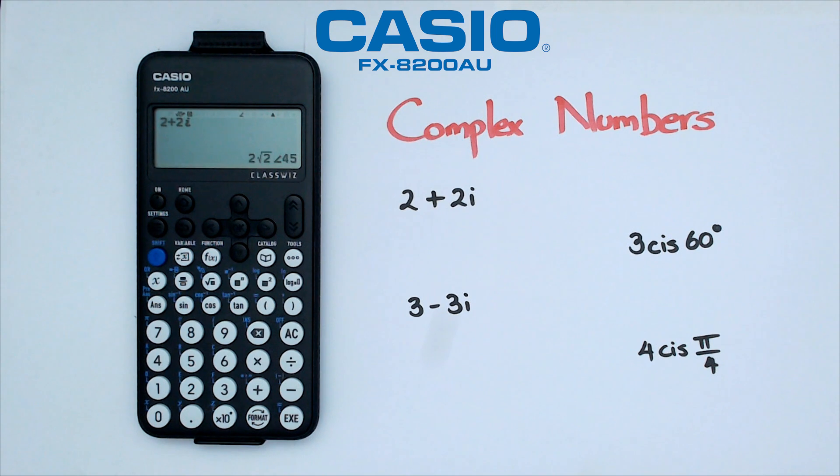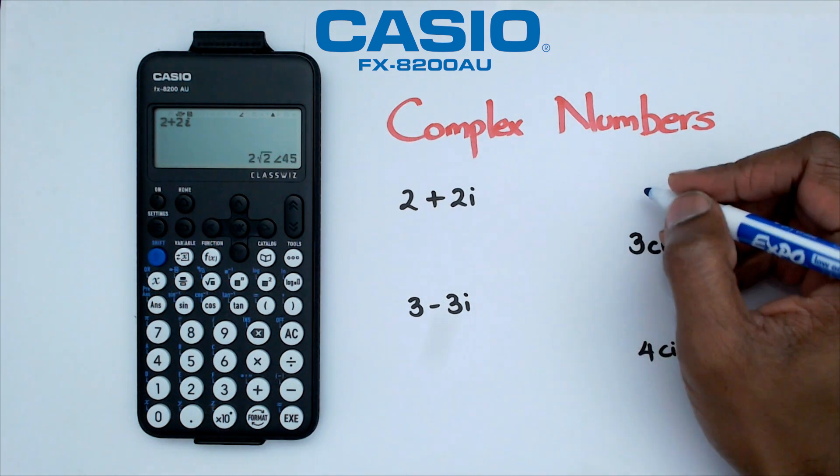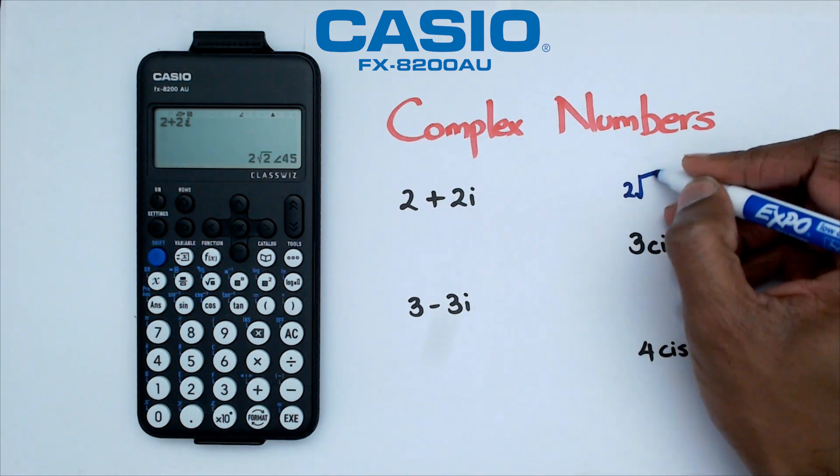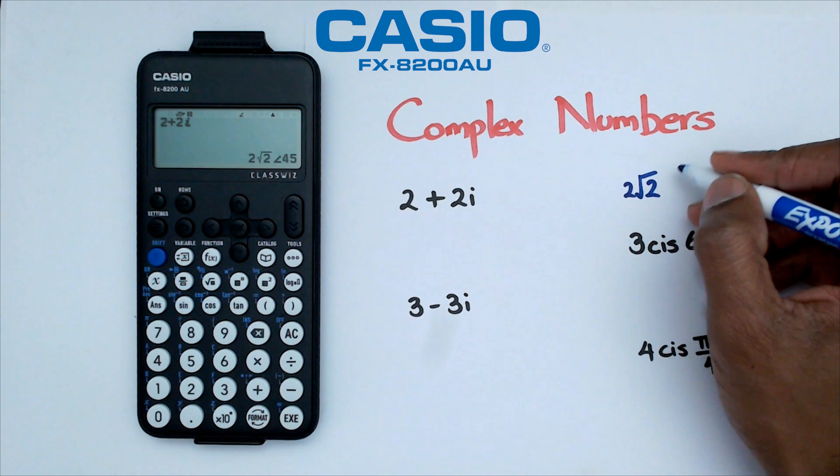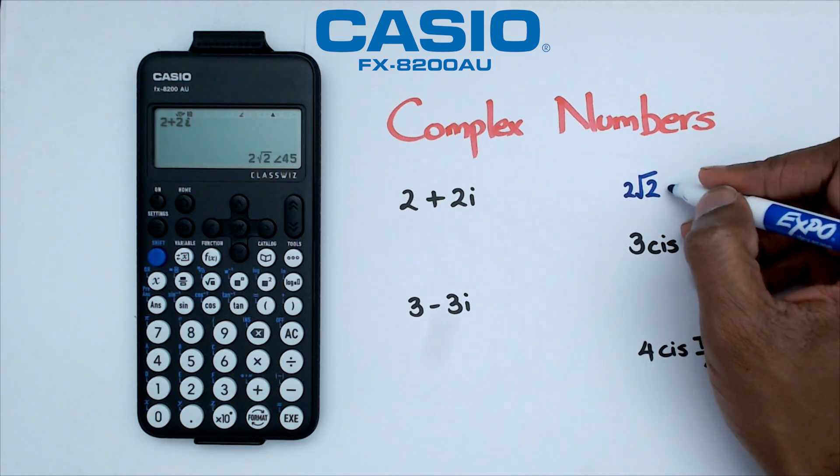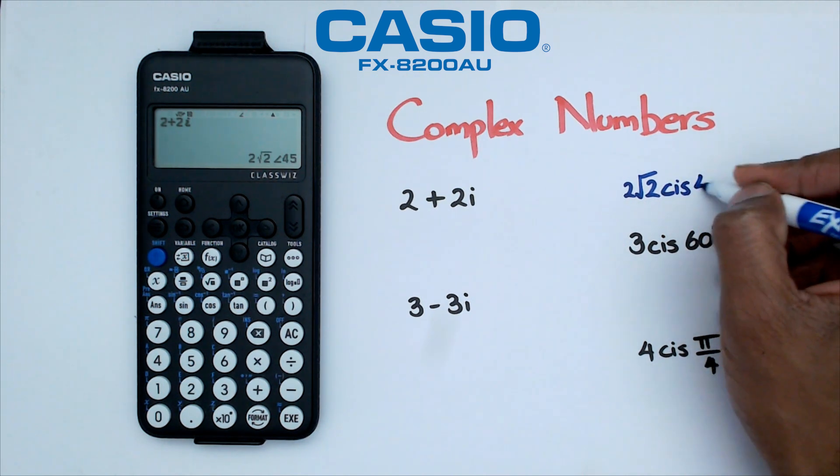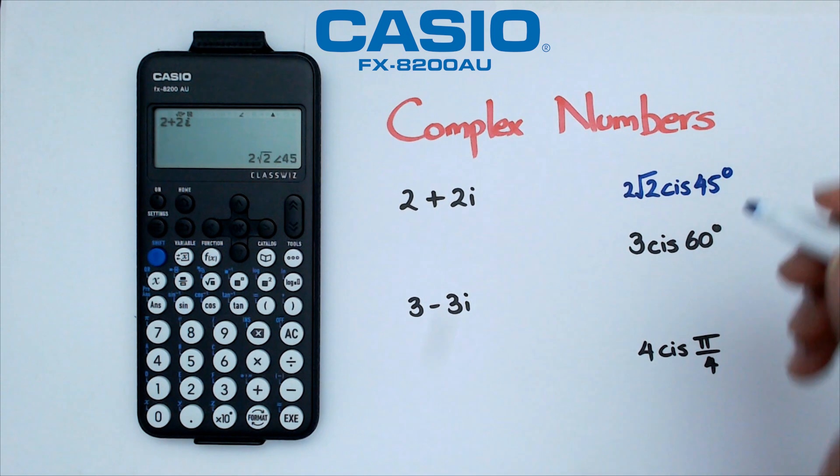I am going to get the answer in polar form, which is 2 root 2. And that little kind of funny looking angle that you see there, that is just cis. So this would become cis 45.